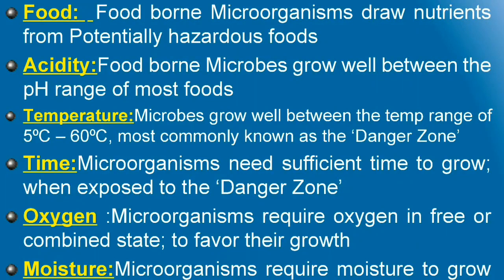A stands for Acidity — food which contains pH from 4.6 to 8, that is neutral to slightly acidic, favors the growth of microorganisms. T is Temperature — from 5 degrees centigrade to 45 degrees centigrade is the dangerous zone for favorable microbial growth. The next T stands for Time — if a product is exposed to the dangerous temperature zone for more than 4 hours, it becomes prone to potential hazard.